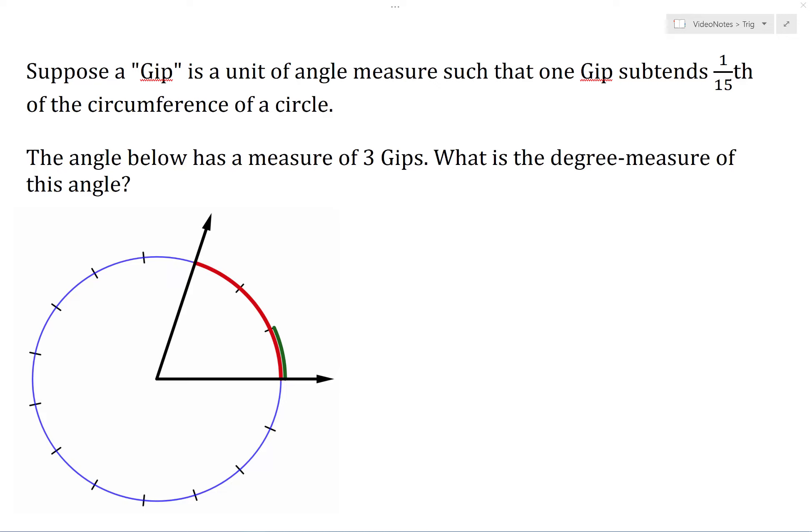We can measure an angle in a number of different units. However, given an angle measure in any unit, we can convert that measure to a measure in a different unit. This is useful if you prefer some type of angle measure unit, such as degrees, and someone reports an angle measure to you in some other unit. So let's see how this works.